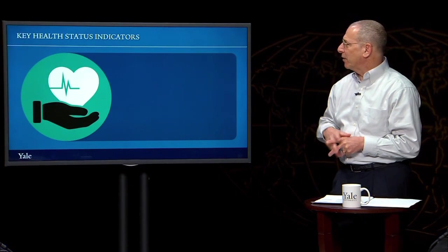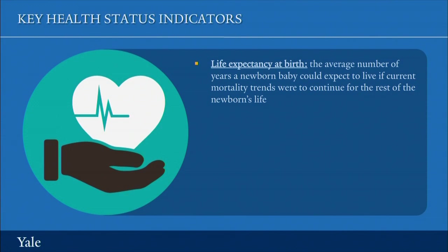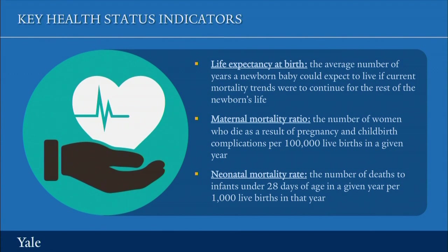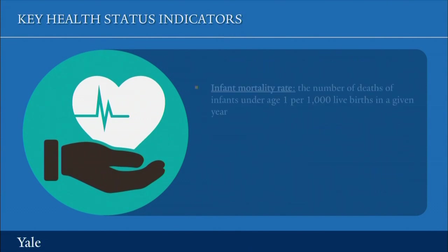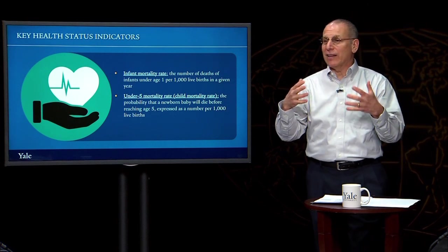So these were all well-articulated definitions. Life expectancy at birth is the average number of years a newborn baby could expect to live if current mortality trends were to continue for the rest of the newborn's life. The maternal mortality ratio is the number of women who die as a result of pregnancy-related causes per 100,000 live births in a given year. Neonatal mortality rate is deaths to infants under 28 days per 1,000 live births, and under-five child mortality rate is the probability that a newborn will die before reaching age five, expressed per 1,000 live births.